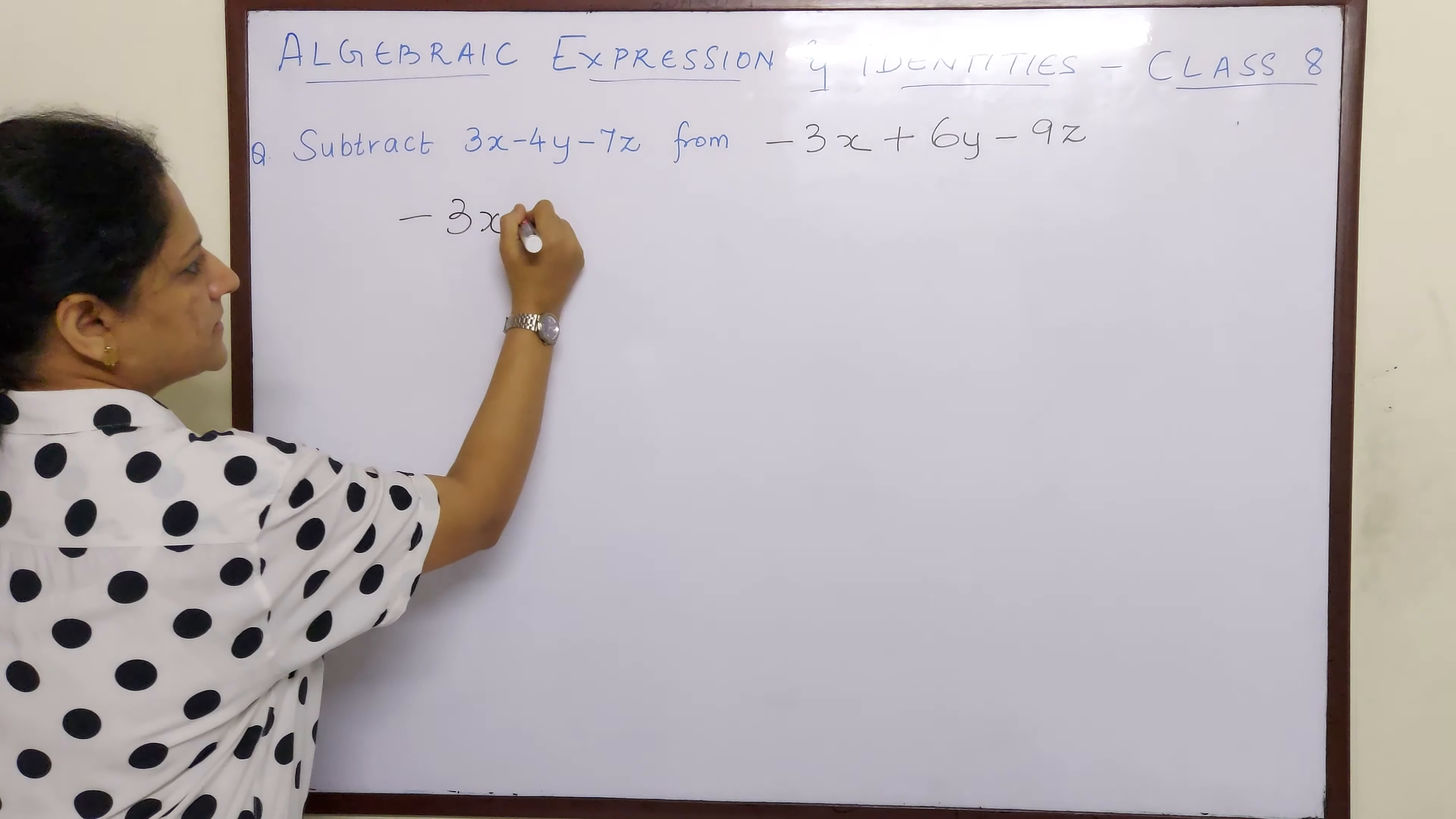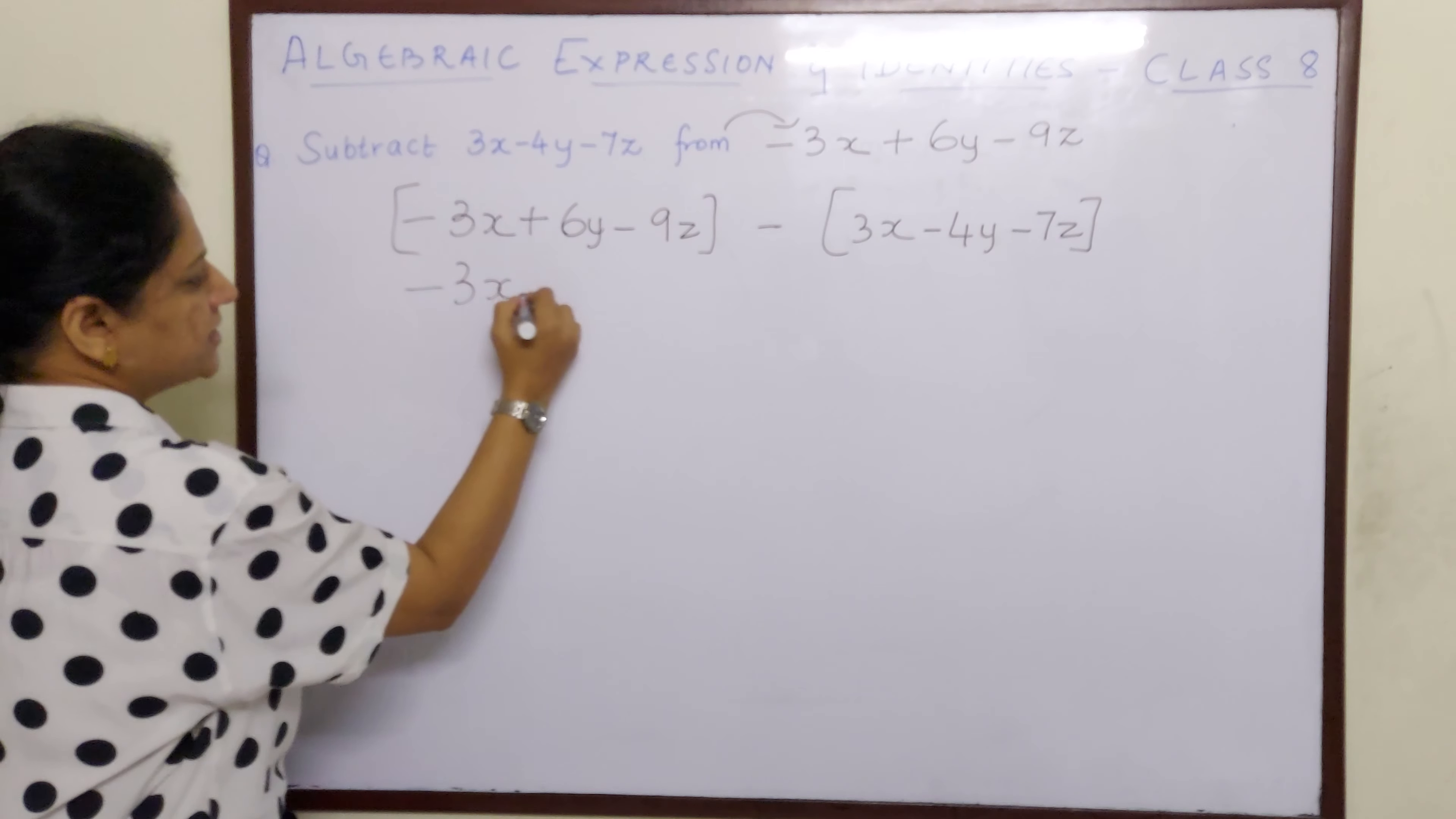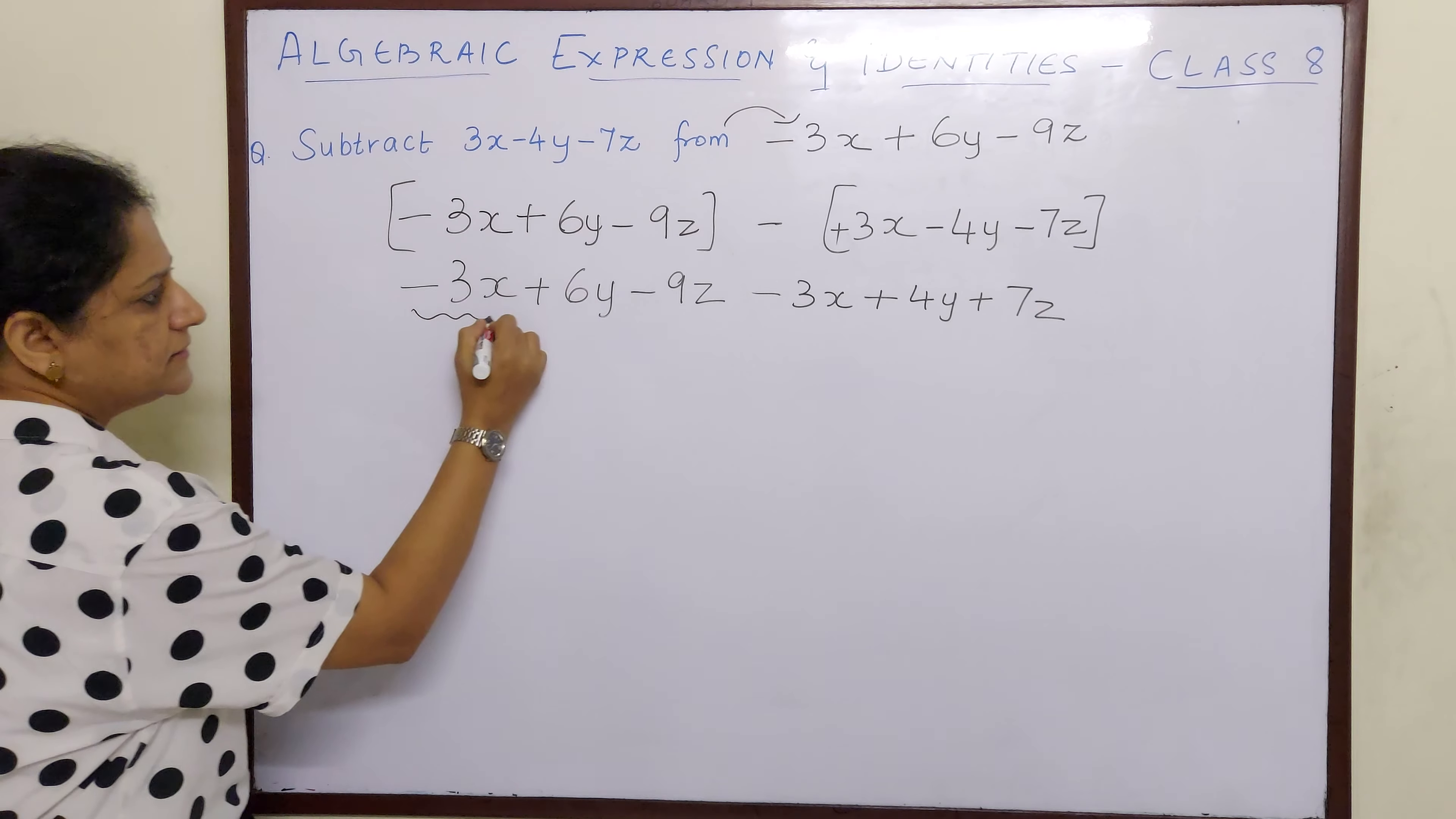We will put minus sign in between these algebraic expressions. So it is minus 3x plus 6y minus 9z. This algebraic expression, whatever comes after 'from', has been brought down here. And this I will take here: 3x minus 4y minus 7z. And what sign I will put in between these two? Minus. So we are going to do subtraction. The first one will not get changed, it will remain as it is. And here it is minus sign, children. So everything inside this bracket will change. So it will become minus 3x, plus will become minus, minus will become plus, and again this minus will become plus. Why? Because minus into plus is minus, minus into minus is plus, and minus into minus is plus.